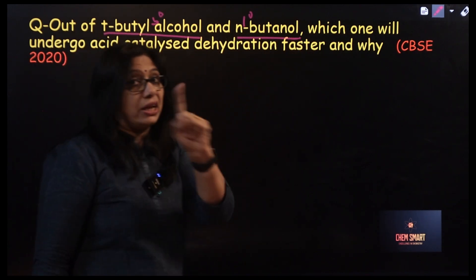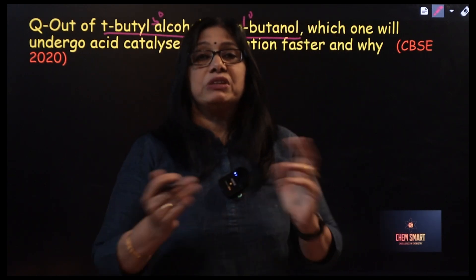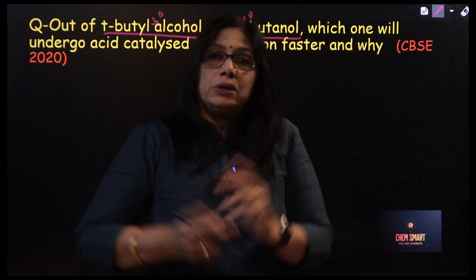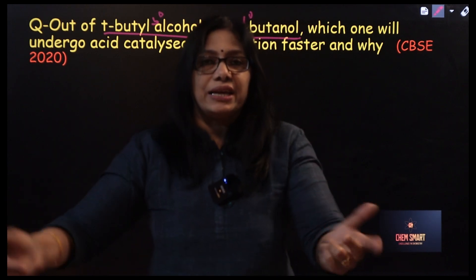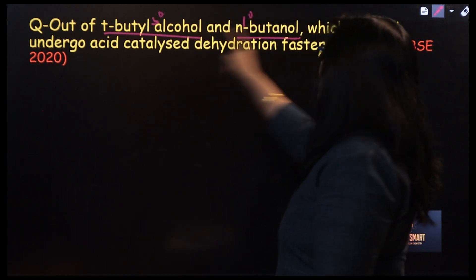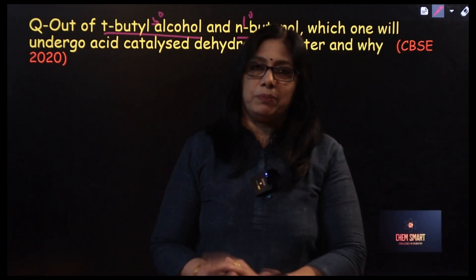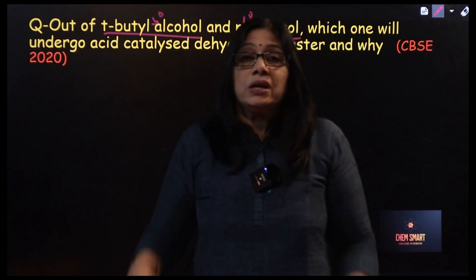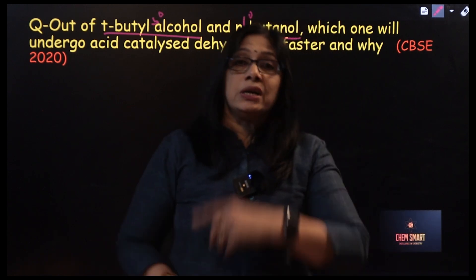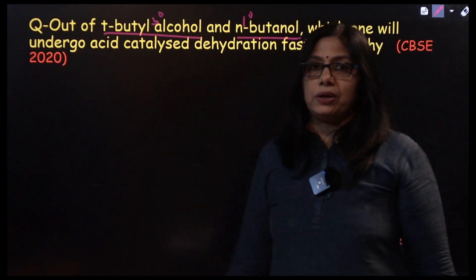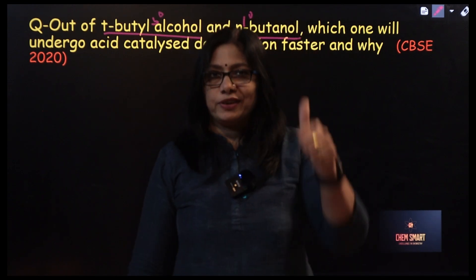Tertiary butyl alcohol will form a tertiary carbocation during the reaction, whereas N-butanol will form a primary carbocation. Which one is easier to be formed? Tertiary. So tertiary butyl alcohol will undergo easy acid-catalyzed dehydration compared to N-butanol, which is primary. The answer is tertiary butyl alcohol. Reason: the stability of the tertiary carbocation is greater than that of the primary carbocation, so it is easier to form and undergoes the faster reaction.